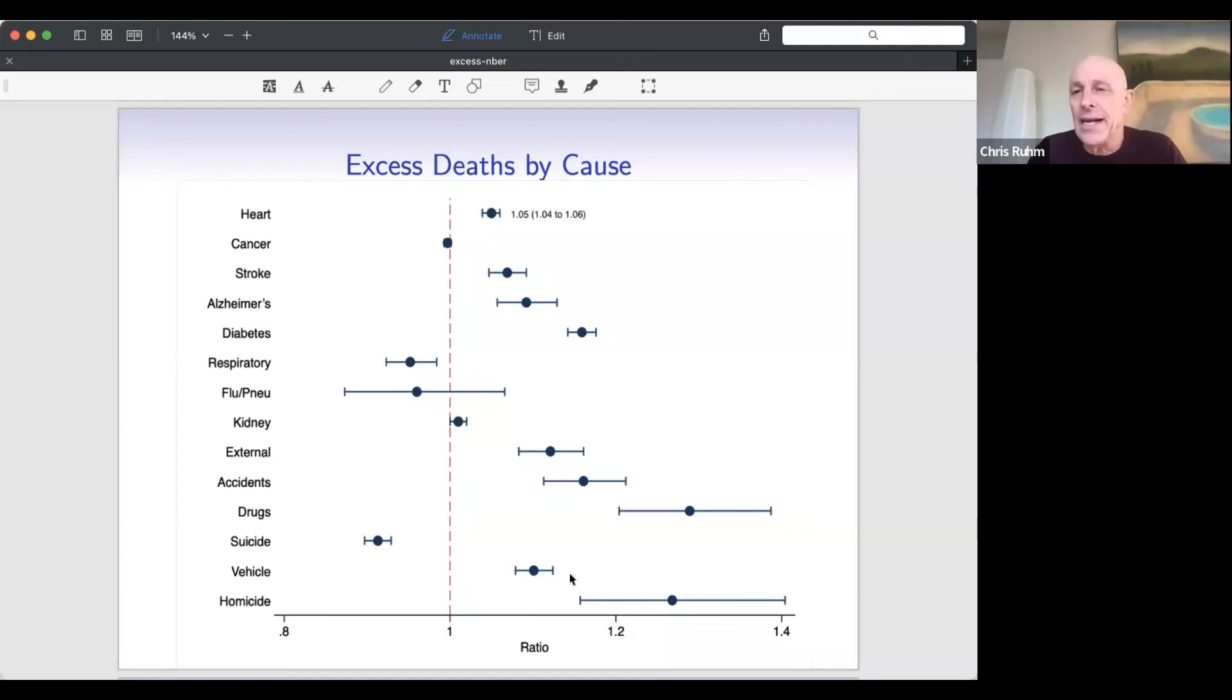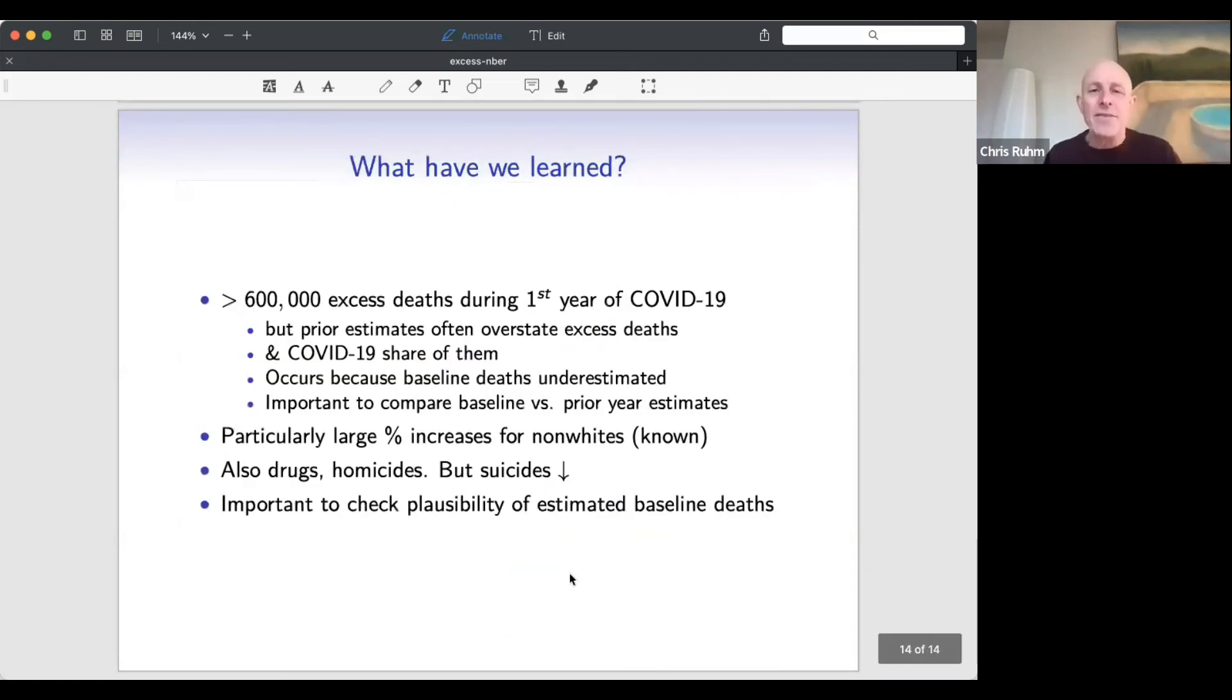The last one I'll point out, which is also quite interesting, is that vehicle fatalities have increased fairly significantly. Now, that's a surprise because usually during economic downturns, vehicle fatalities fall and fall sharply. And we know that miles driven fell, particularly at the beginning of the pandemic. And so you would have expected vehicle fatalities to have fallen. The fact that they haven't suggests that risky driving increased. So there's certainly at least anecdotal and maybe harder evidence than that, that people were on empty roads and they were speeding, they were driving really fast or driving recklessly. And so that might be the cause of that.